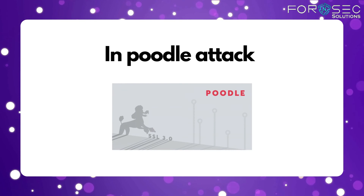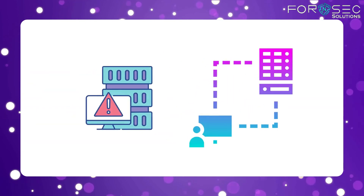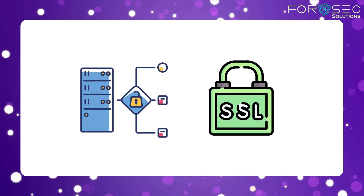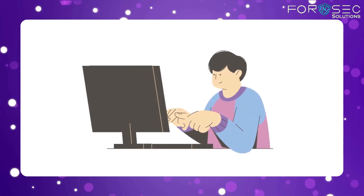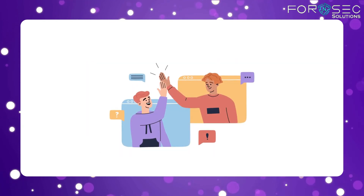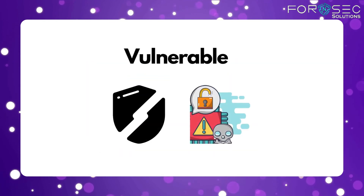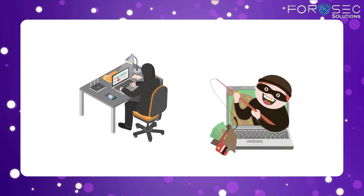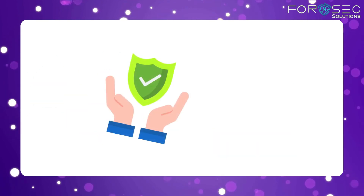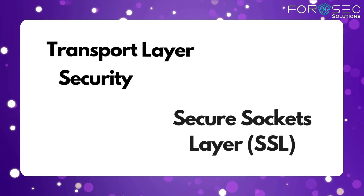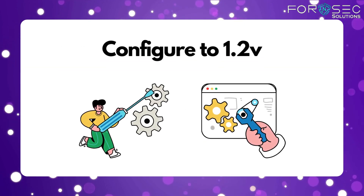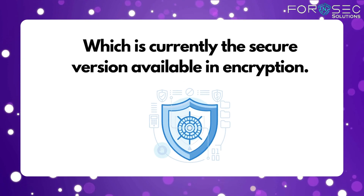Poodle attack mein, attacker server ke connection ko baar baar drop karaake older SSL version that is 3.0 ko use karne pe majboor kar deta hai, jiske wajah se saari communication old version pe hoti hai, jo ki vulnerable hai aur attacker saari info le leta hai. In dono attacks se bachne ke liye ek secure way hai — TLS SSL version ko 1.2 pe configure karna, which is currently the secure version available in encryption.